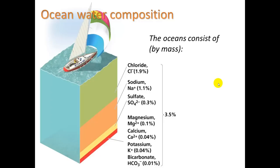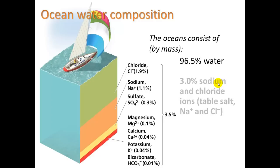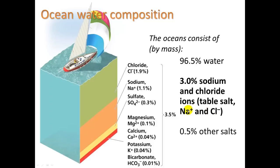Ocean water composition: the ocean consists mostly by mass of 96.5% water, 3% sodium and chloride ions (Na⁺ and Cl⁻), meaning table salt, and the other 0.5% are other salts — magnesium, calcium, potassium, bicarbonate, things like that.